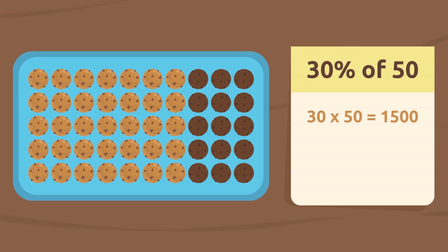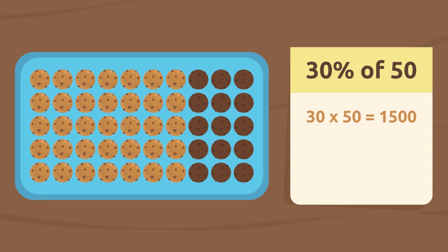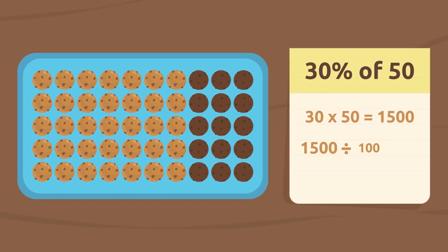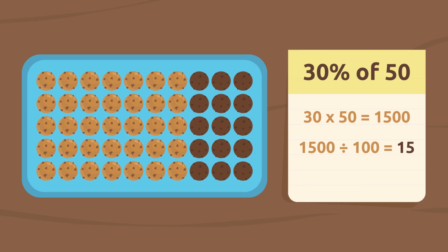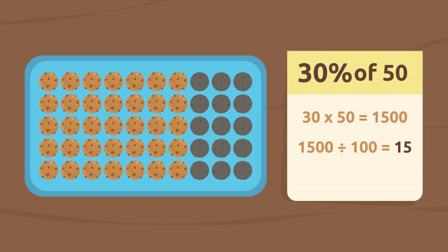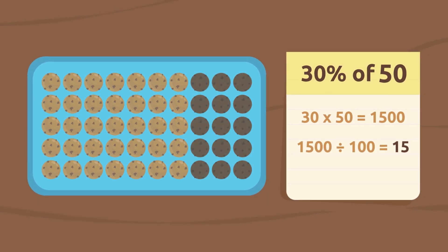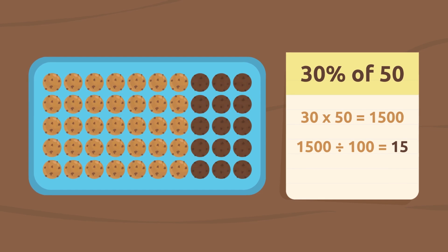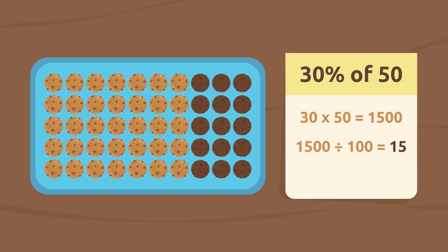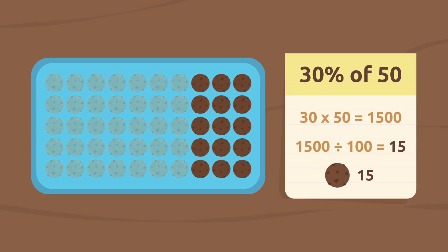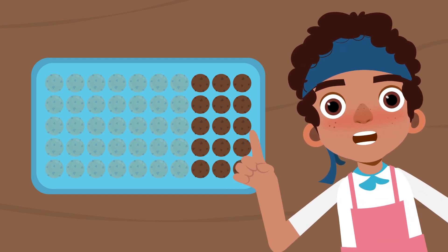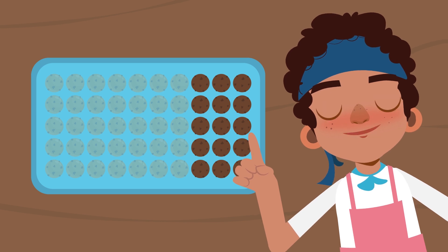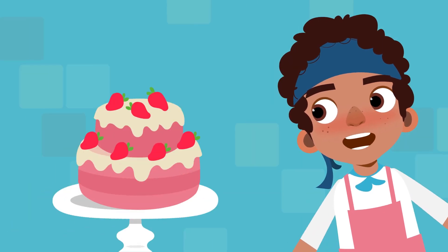Then we divide this result by 100, which equals 15. So if 30% of my 50 cookies got burned, that means I burned 15 cookies. Did you understand that? Let's try with another example.